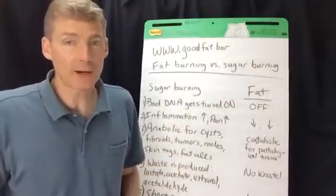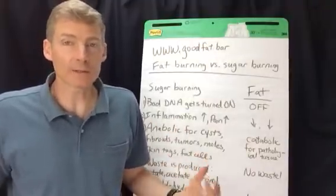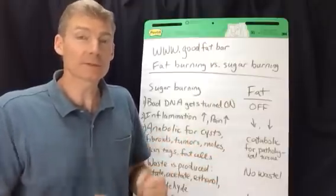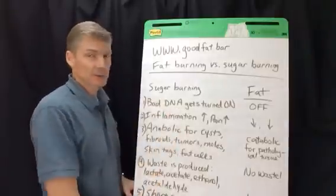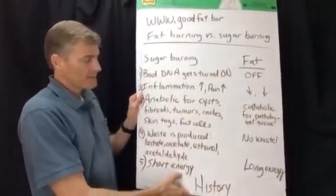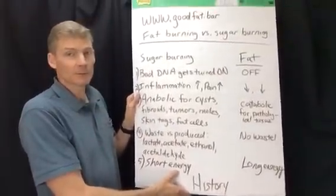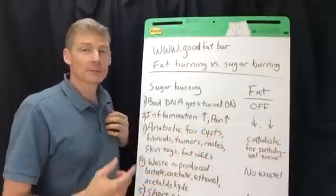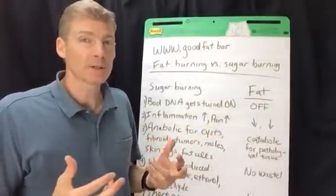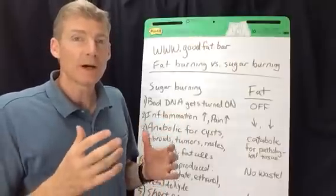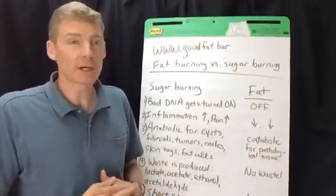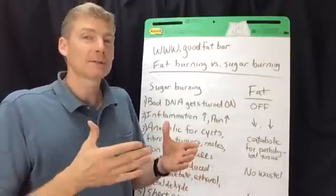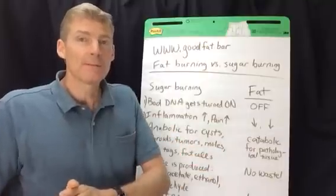Number five is short-term energy. Sugar gives you short-term energy — for some people it's only half an hour, and at most about four hours. If you see somebody eating three meals a day plus snacks and they need those snacks, it's because they have very short-term energy and have to keep fueling up. They're burning their tissues and creating inflammation and pain because their mitochondria are so used to burning sugar. Mitochondria are the little energy factories inside each cell — there are hundreds per cell.